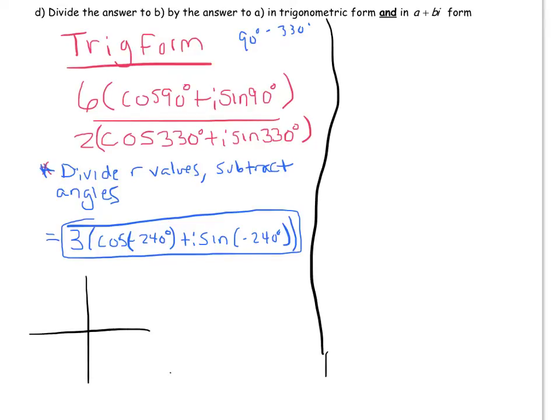To do that I need to evaluate cosine of negative 240 and sine of negative 240. So I do that by noting that negative 240 degrees would land me, well I'm rotating a negative angle, it would land me here, right?